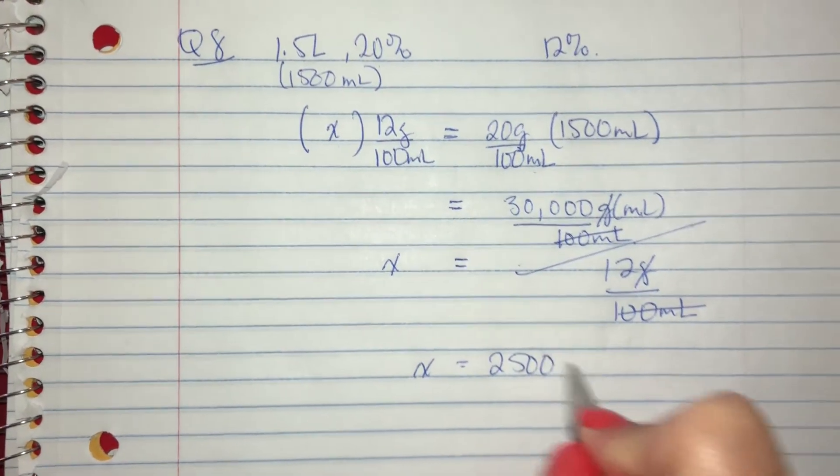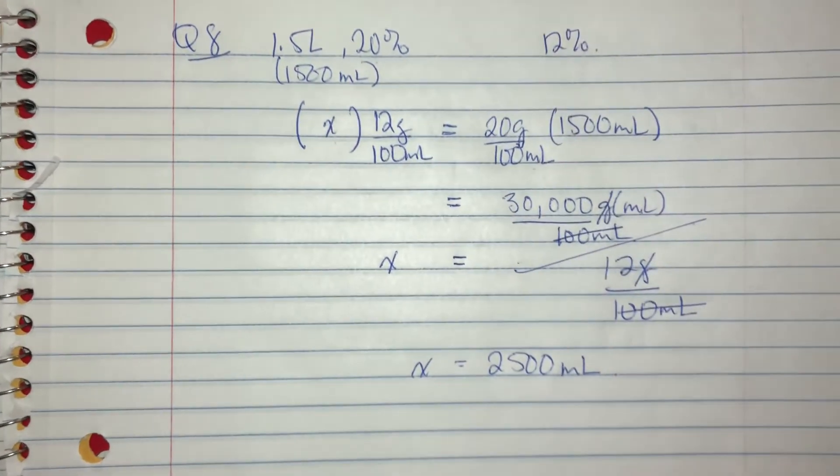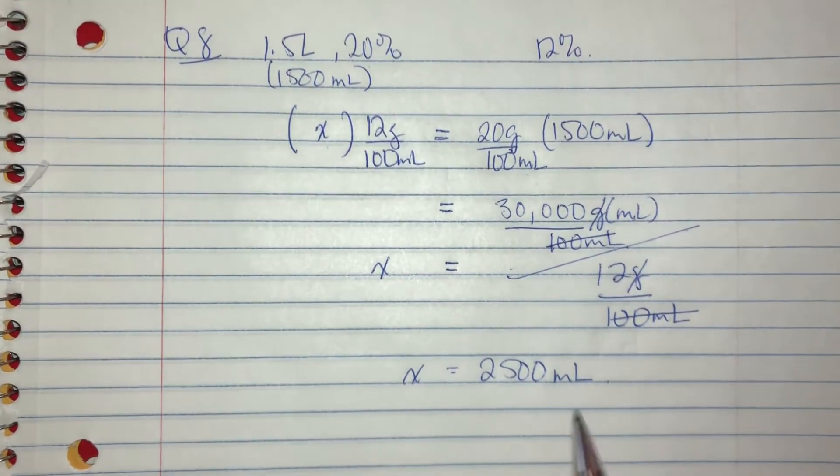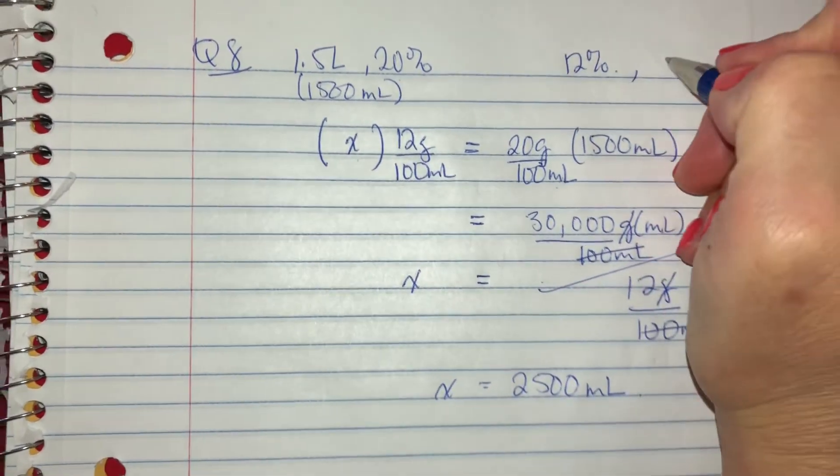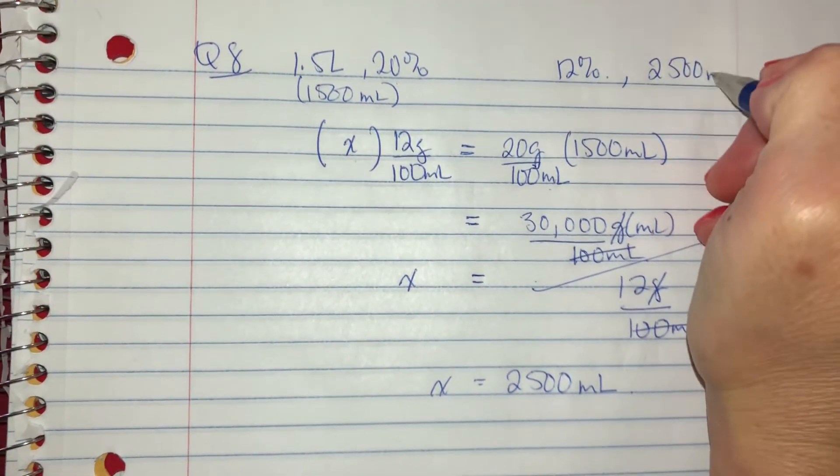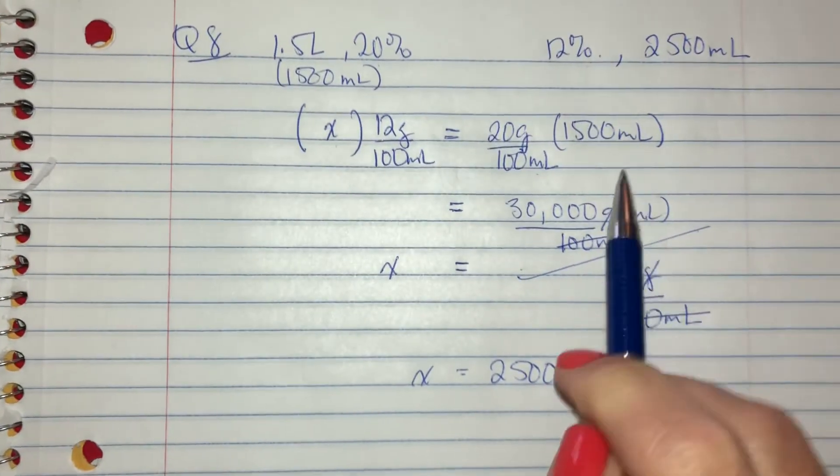It's mils. The answer is 2,500 mils. Okay. This means that in the end I'm going to have 2,500 mils of a 12% solution.